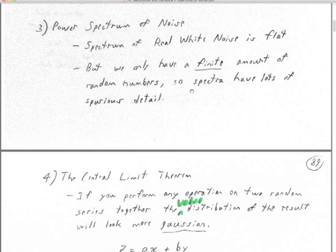You Fourier transform that noise interval, and you'll find it's anything but flat. The spectrum of noise is not flat. For any sampled data, the spectrum of noise looks a whole lot like noise — it's bouncing up and down, and the spectrum of that noise is also bouncing up and down unpredictably. You never get that flat line.